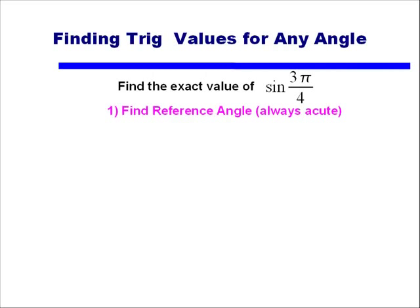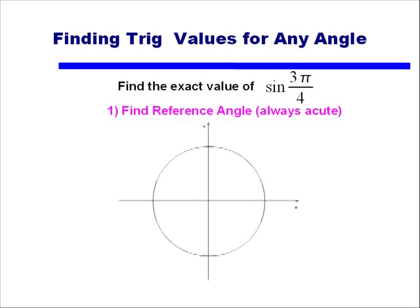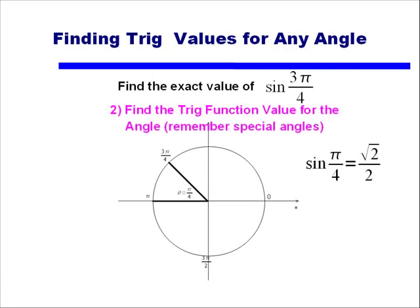Let's take our first example: find the exact value of sine of 3π/4. We need to first find the reference angle, and we'll do that by going back to our x-y axes and our unit circle. Now instead of 0, 90, 180, and 270 degrees, we'll look at this in terms of 0, π/2, π, and 3π/2. 3π/4 is more than π/2 but not quite π, so an angle of 3π/4 would fall about here in quadrant 2. The reference angle — the angle formed by the closest x-axis and that terminal side — looks to be π/4.